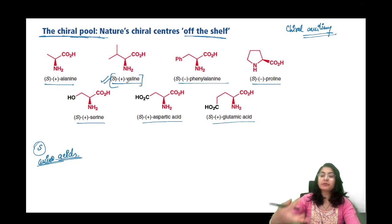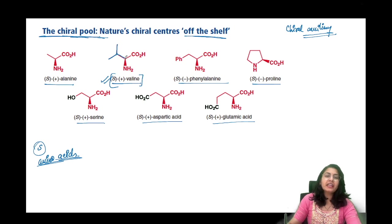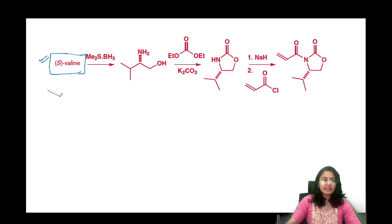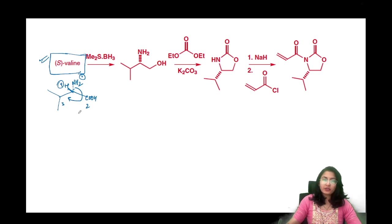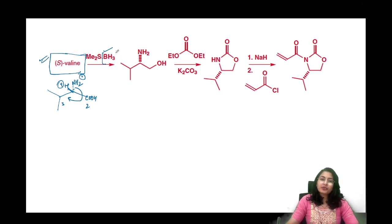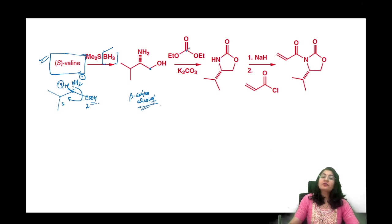Let's take valine and see if we can make a chiral auxiliary from it. Valine has an isopropyl group as its side chain. S-valine has a COOH and NH2 group. Checking the configuration: first priority below the plane, second and third assigned, fourth above — clockwise rotation but H is above the plane, so it is S-valine. BH3 is going to reduce the carboxylic acid to an alcohol, giving an alpha-amino alcohol — a beta-amino alcohol.